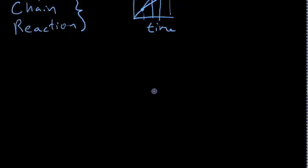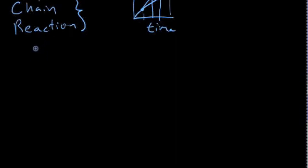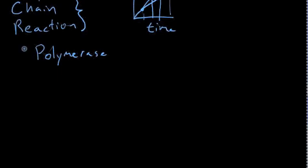That's all very abstract, so let's talk about exactly what happens. To do PCR you need a number of things. First, you need polymerase — that's item number one. This is obviously the core thing you need to make DNA, to make a DNA copy of another bit of DNA.